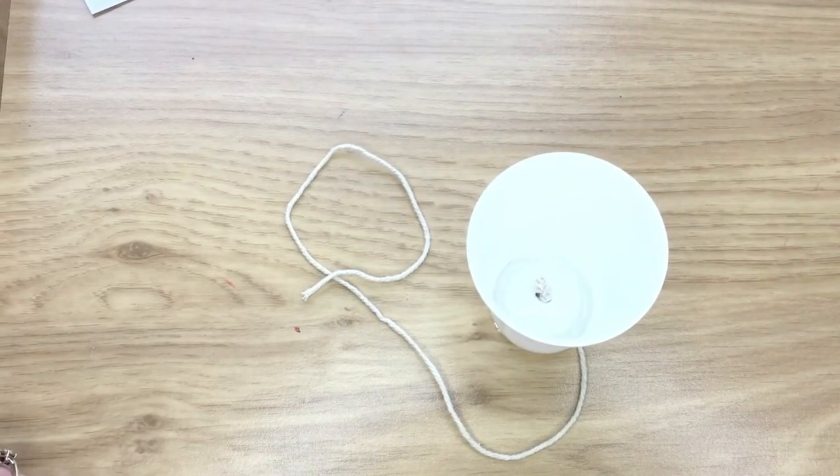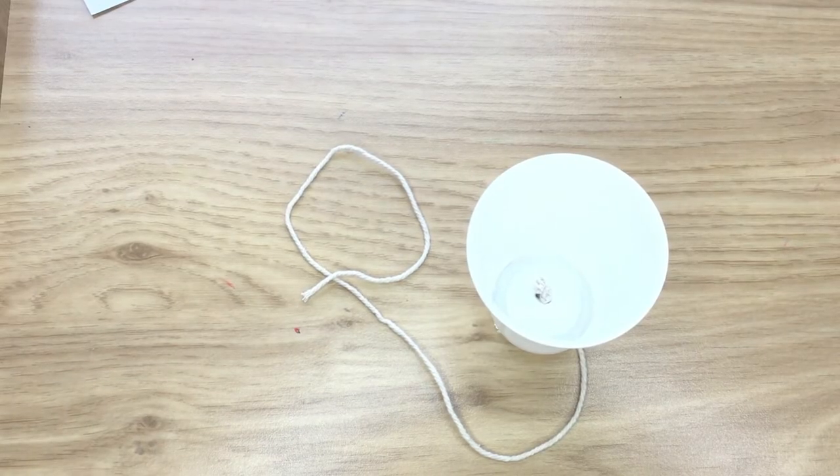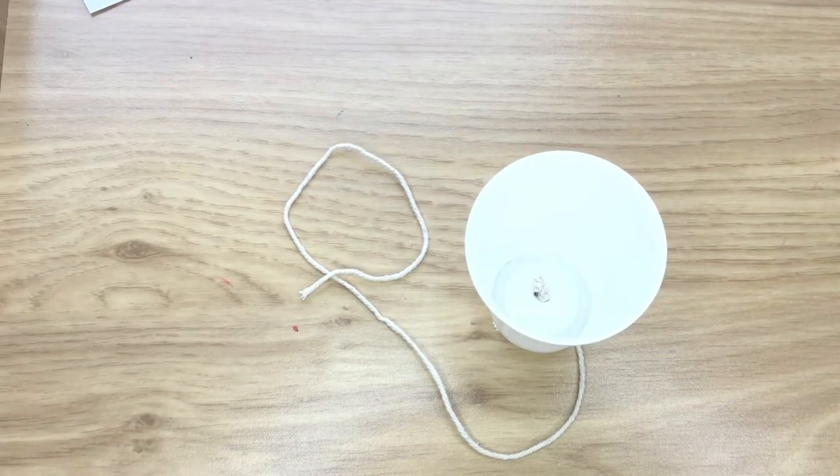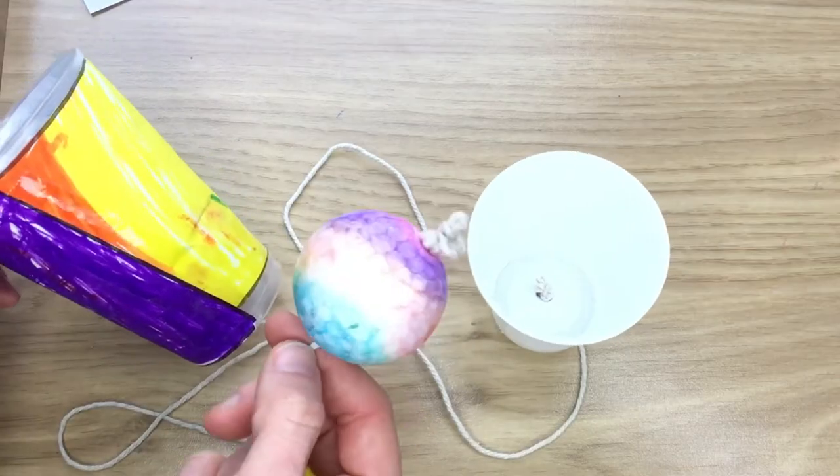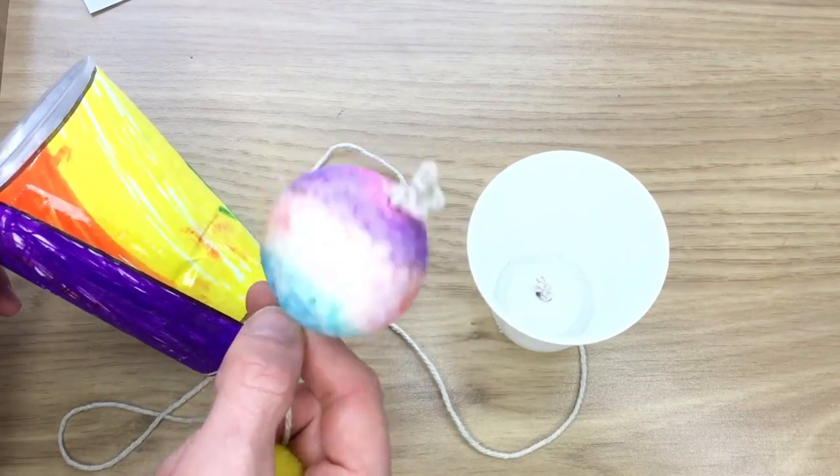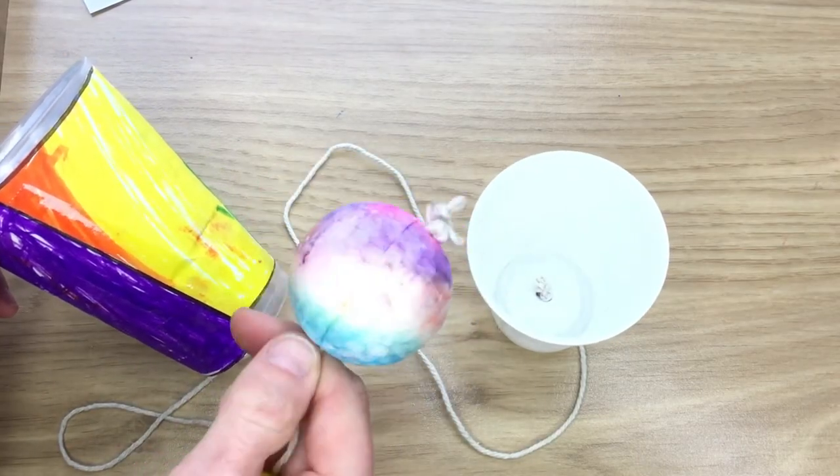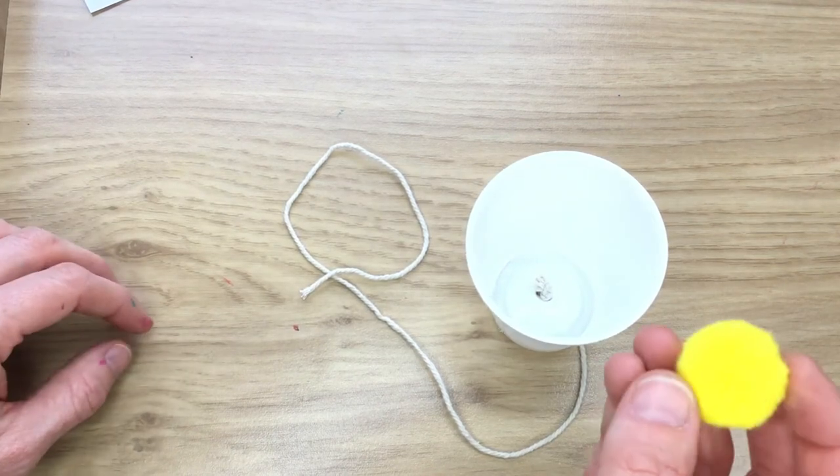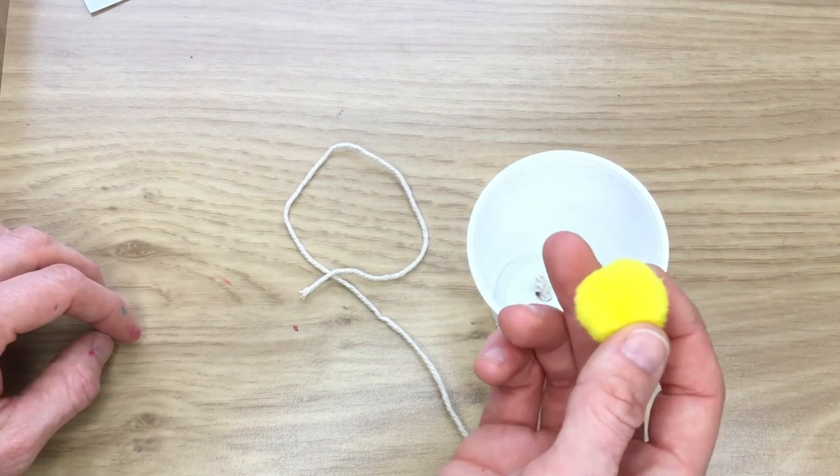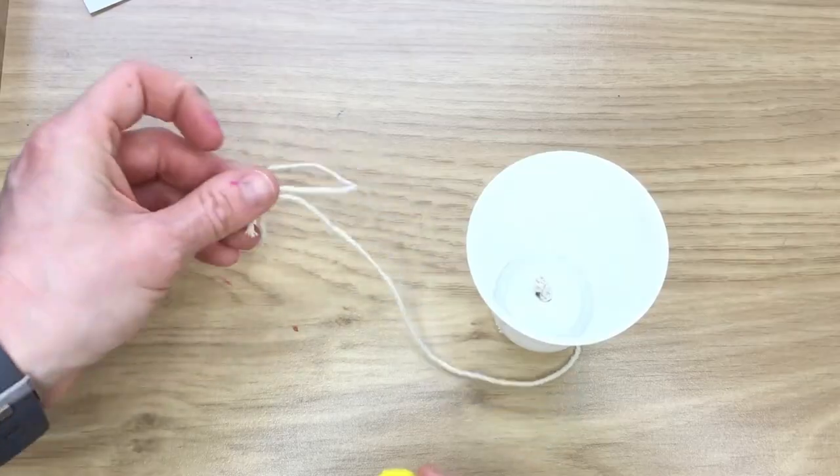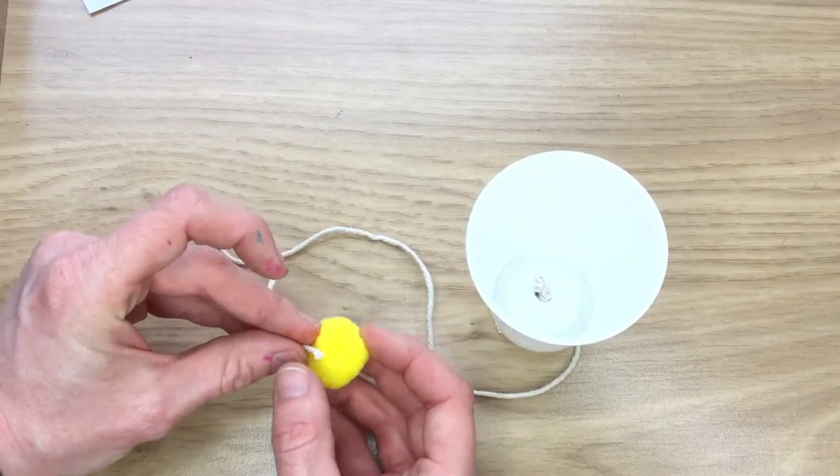The next thing you need to do is to get your ball. Now, on the one that I made with my daughter, she's used a polystyrene ball and we've put a hole all the way through it. But this time, I'm going to use just a big pom-pom. So if you've got a giant pom-pom, that just needs to be stuck onto there.